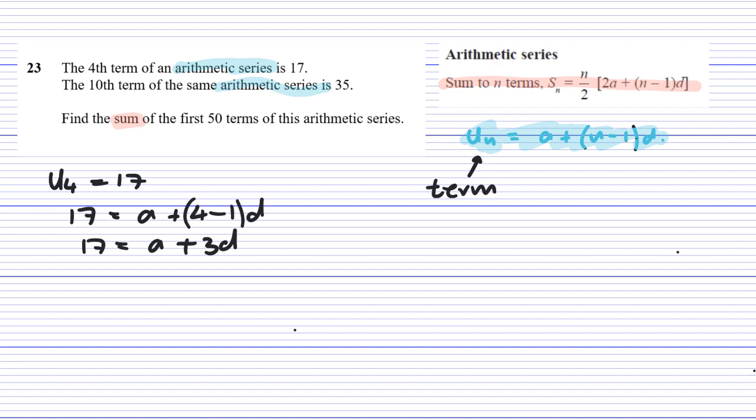We also know that the 10th term, U10 is equal to 35, which gives us 35 is equal to the first term, plus 10 minus 1, which is 9, times D. So that gives me A plus 9D.